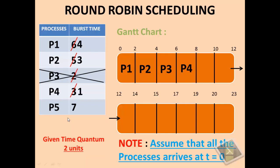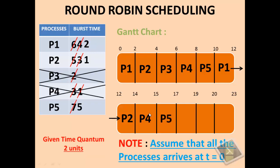Next is P5 with a burst time of 7; it will execute for 2 units and be left with 5. Now the first process back in the ready queue is P1 with burst time 4; it will execute for 2 units and be left with 2. Next is P2 with 3 units remaining; it will be left with 1. Next is P4, which has only 1 unit remaining, so it executes from time 14 to 15 and completes — it is removed from the ready queue. Then P5 with burst time 5 executes for 2 units and is left with 3.